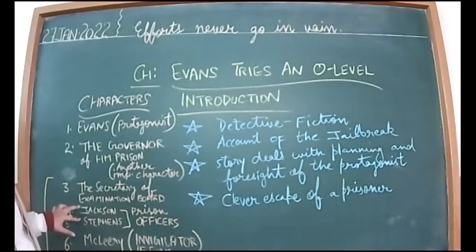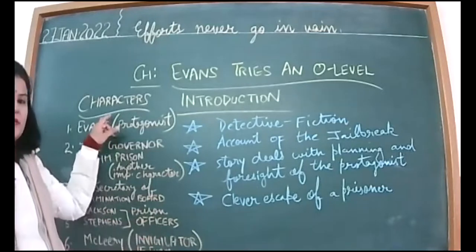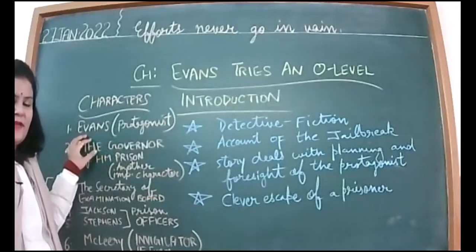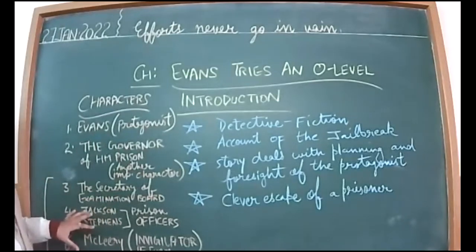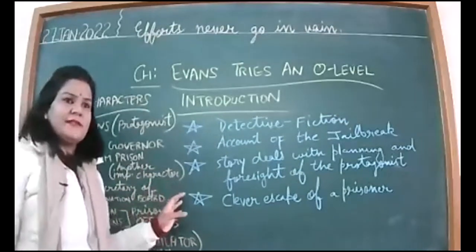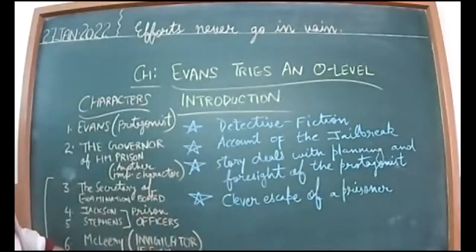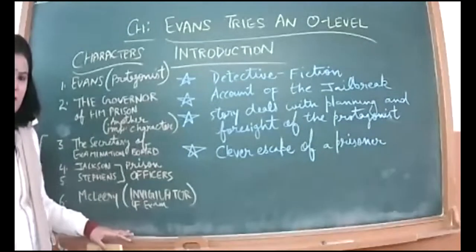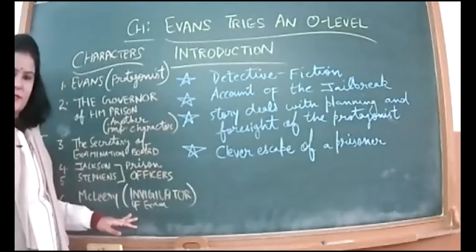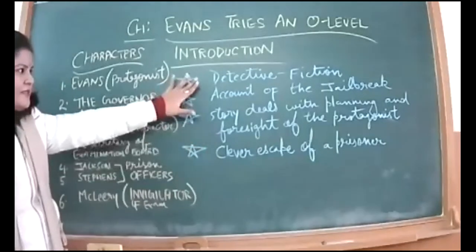Jackson and Stephens are two prison officers appointed to keep watch on Evans. Evans is the prisoner in HM Prison, and these officers check whether he is present and what he is up to, because Evans has already made successful escapes in the past. That's why very tight security is in place. Reverend McLeary — whose full name is Steward McLeary — is the invigilator of the exam.